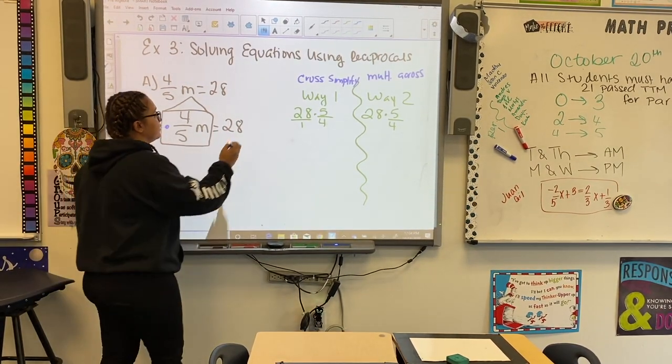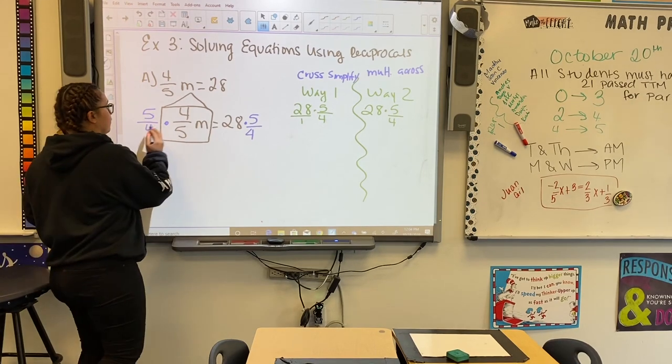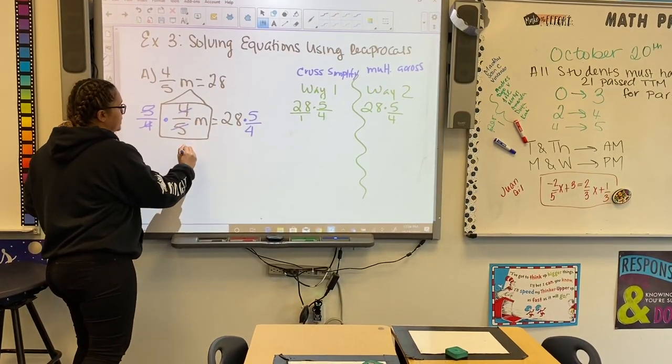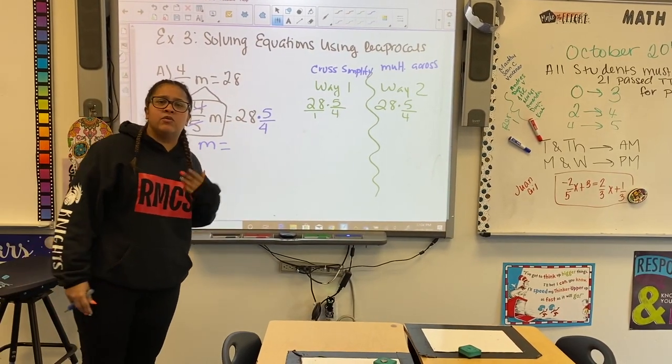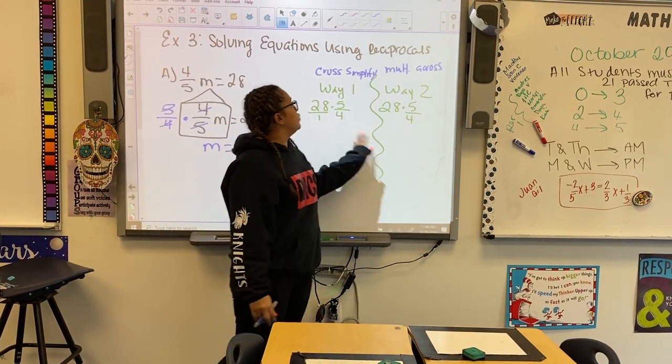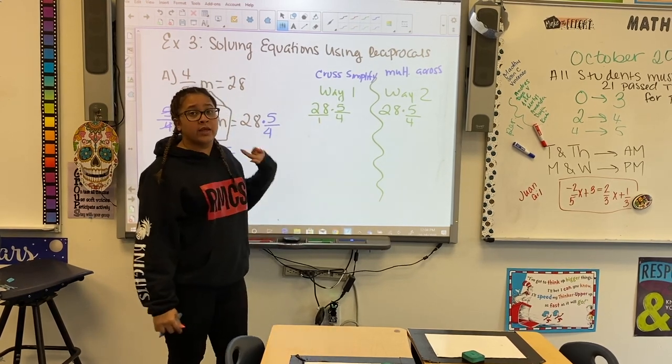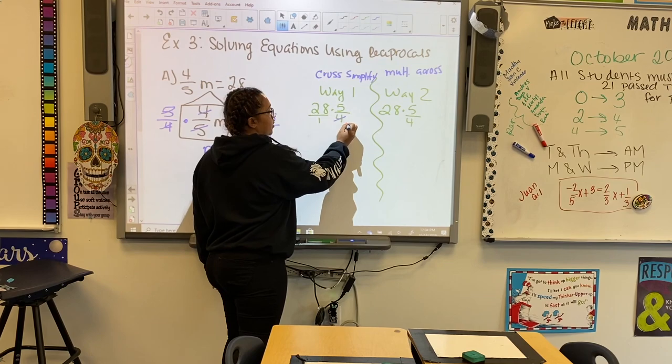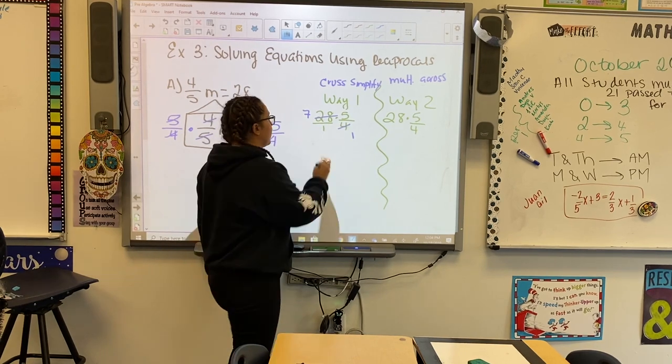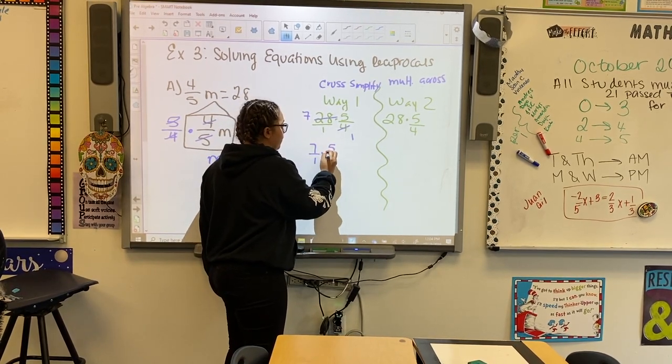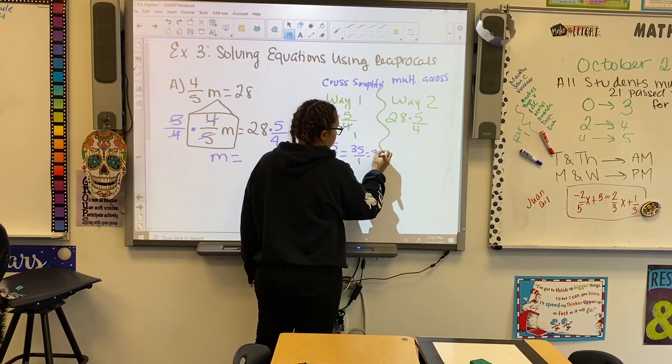What we do to one side, we do to the other. Now, there's two ways. Here we know that 4 goes into 4 once, 5 goes into 5 once, and I'm left with m. What I need to figure out is how do I do 28 times 5 over 4? Our first way, we can cross-simplify, which means what number goes into both 4 and 28? 4 goes into 4 once. 4 goes into 28, 7 times. I rewrite my new fractions. 7 over 1 times 5 over 1 equals 35 over 1, which equals 35.